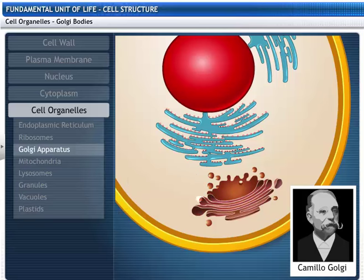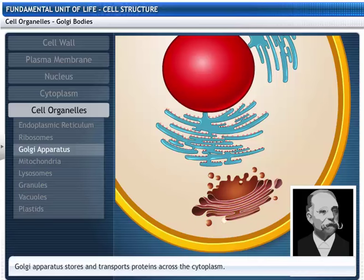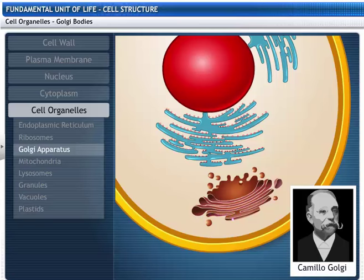Vesicles containing soluble proteins produced by the endoplasmic reticulum fuse with dictyosomes. These vesicles are transported across the cytoplasm. They fuse with the cell membrane and release the proteins outside the cell. Golgi bodies are also known for the synthesis of glycoproteins.